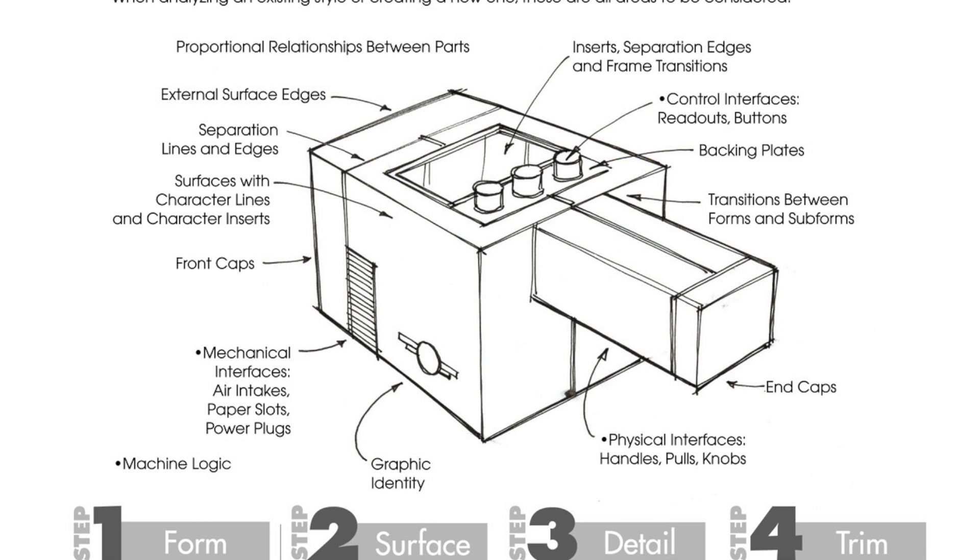Surfaces with character lines and character inserts, front caps and end caps - these are potential parts you can add into products, but don't feel you necessarily have to. There are some things that are necessary, such as mechanical interfaces - air intakes, paper slots, power plugs. This is based on how a product works. If you listen to what Steve Jobs said, he says design isn't what a product looks like.